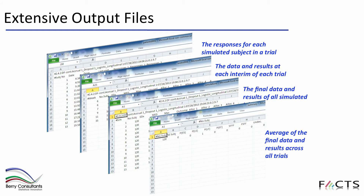All results are collated by the user interface into output files. There is a summary file for quickly checking probability of success or type one error control. A second file contains results for each individual simulation as a single row, useful for post-processing. Behind that are the 'weeks files' showing results at each interim for more detailed post-processing. And finally, patient files contain all simulated patients across all simulated trials, so you can run a completely different analysis and compare it against what FACTS has done.